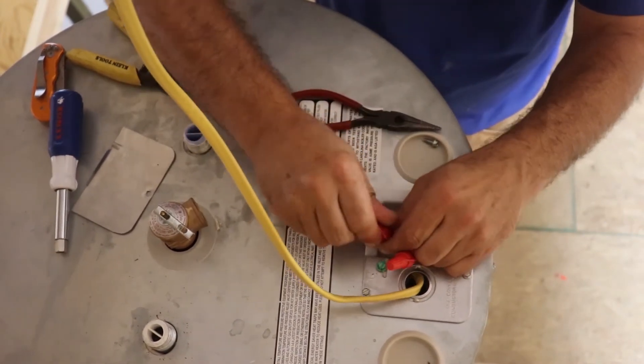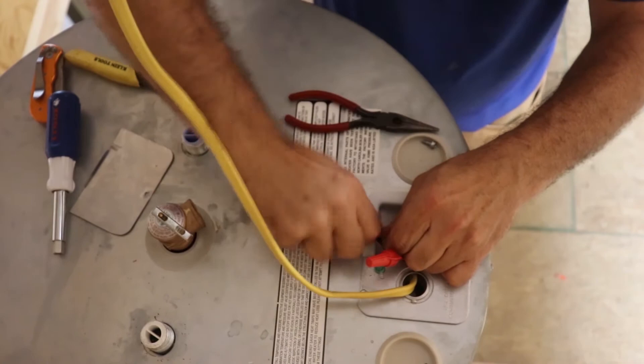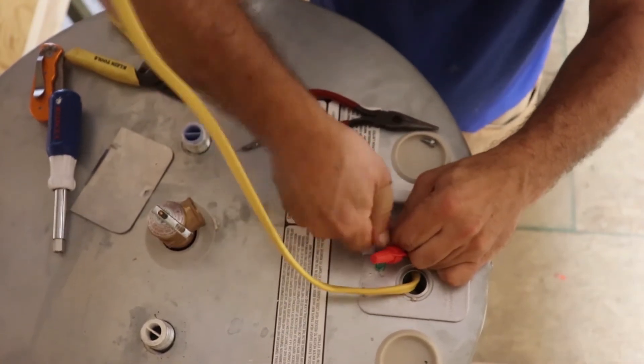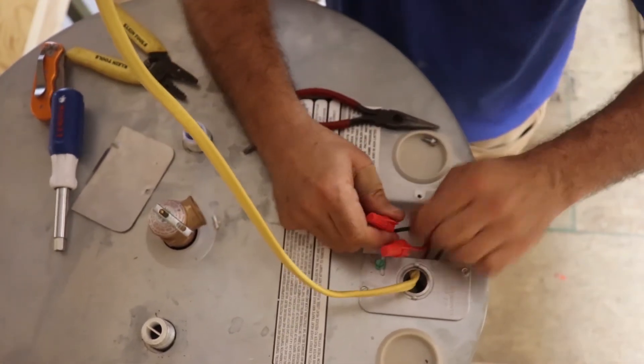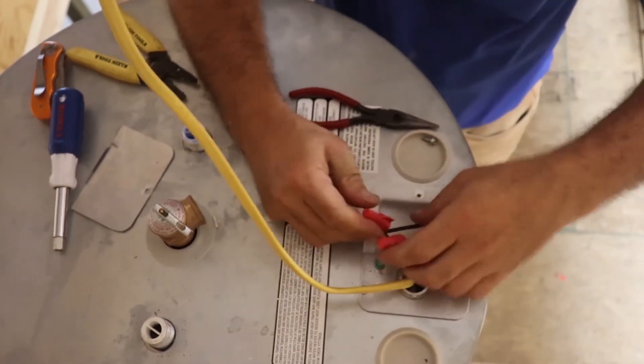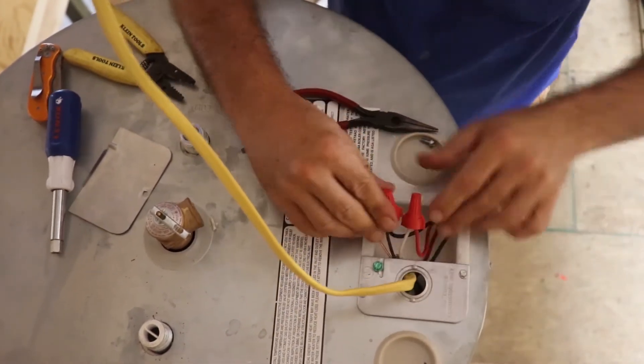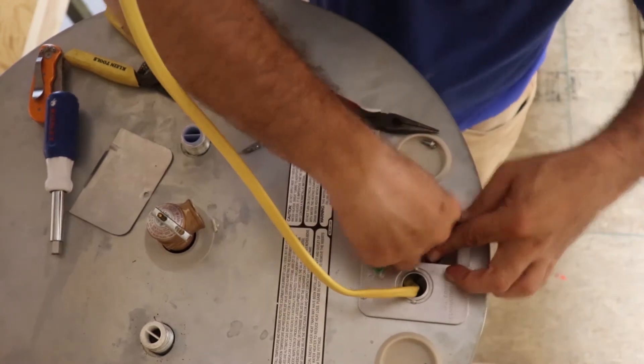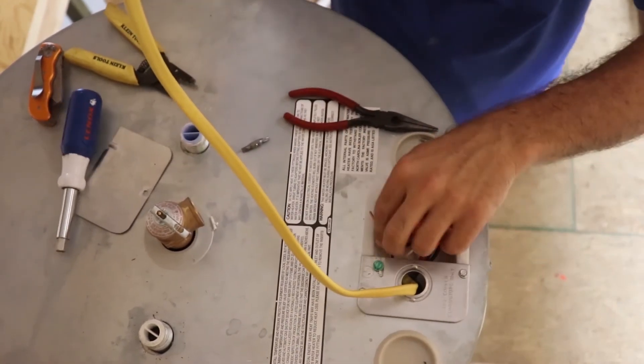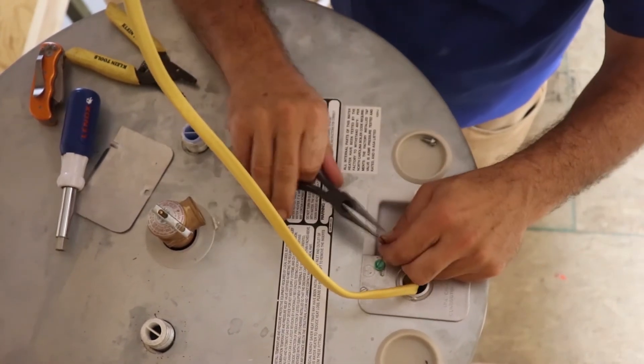But twist that thing on there. Push both wires up in there together and screw that thing down. Give it a couple turns, and then pull on that black wire and make sure that thing's not going to pop off. And then we're going to tuck them in. Now when you're doing this, here again, be careful.